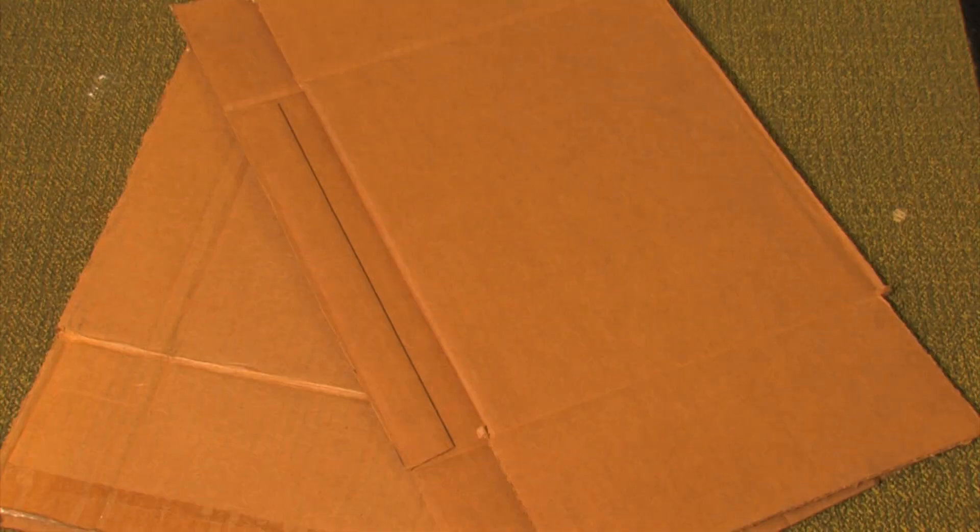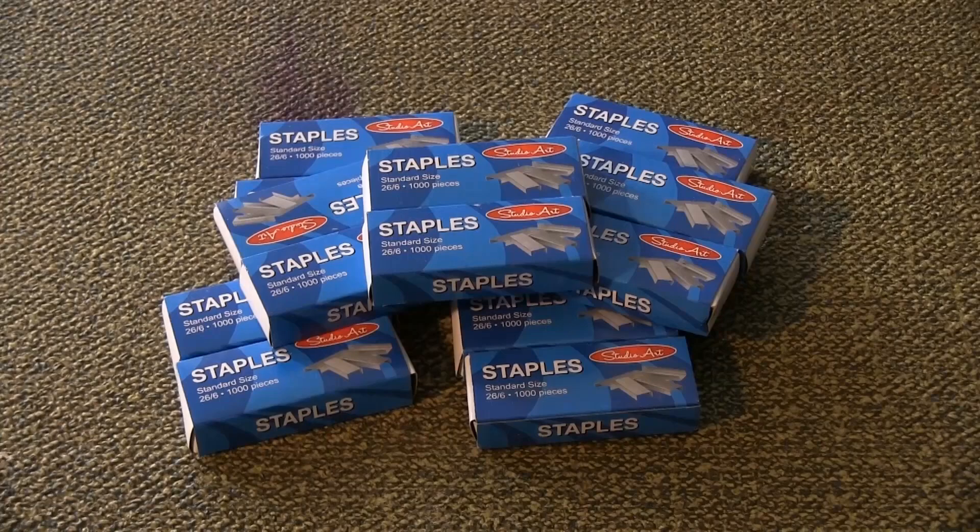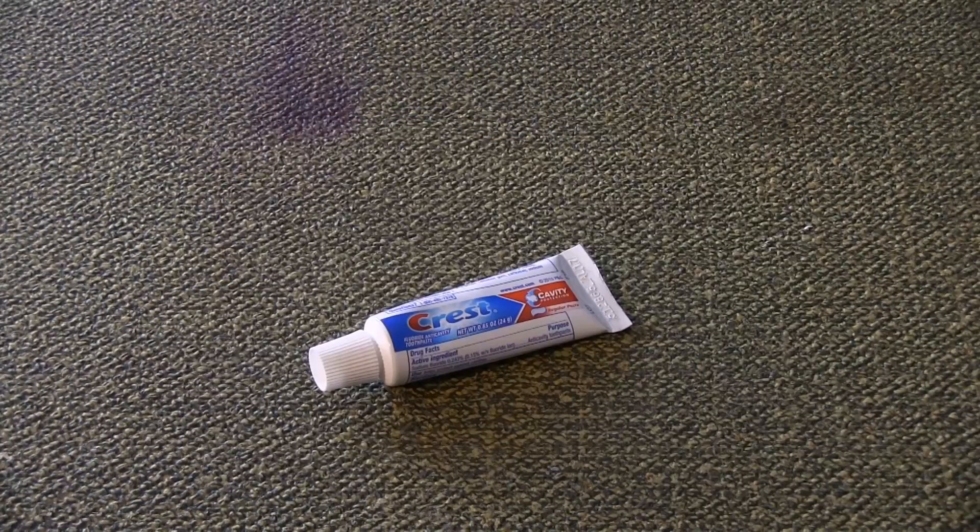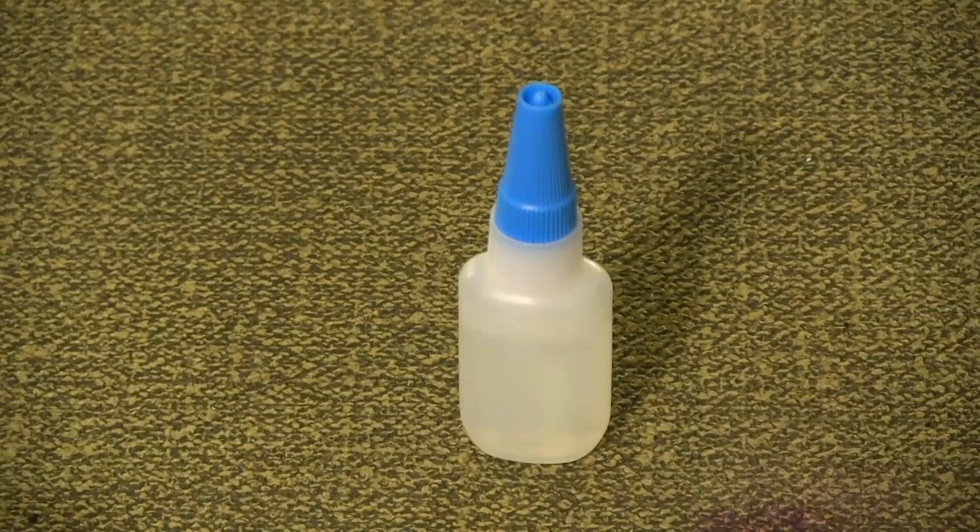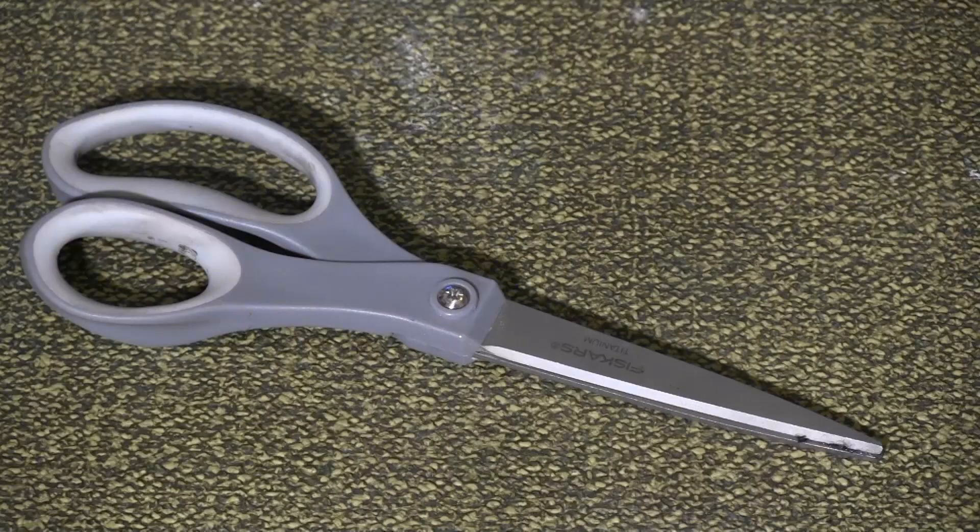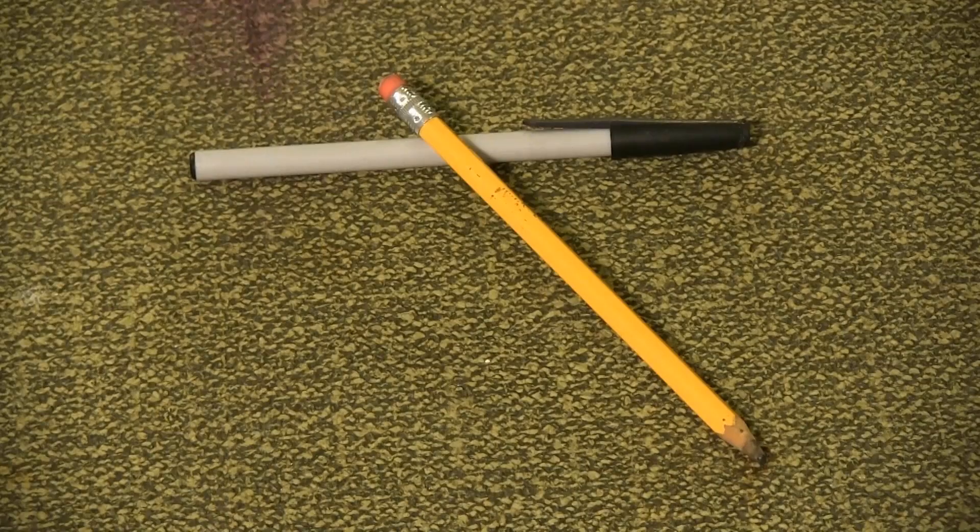Materials for this prop include cardboard, cardstock, duct tape, aluminum tape, about 14 staple boxes, a travel size tube of toothpaste, super glue, a rubber furniture pad, red paint, scissors, an exacto blade, and a pen or pencil.